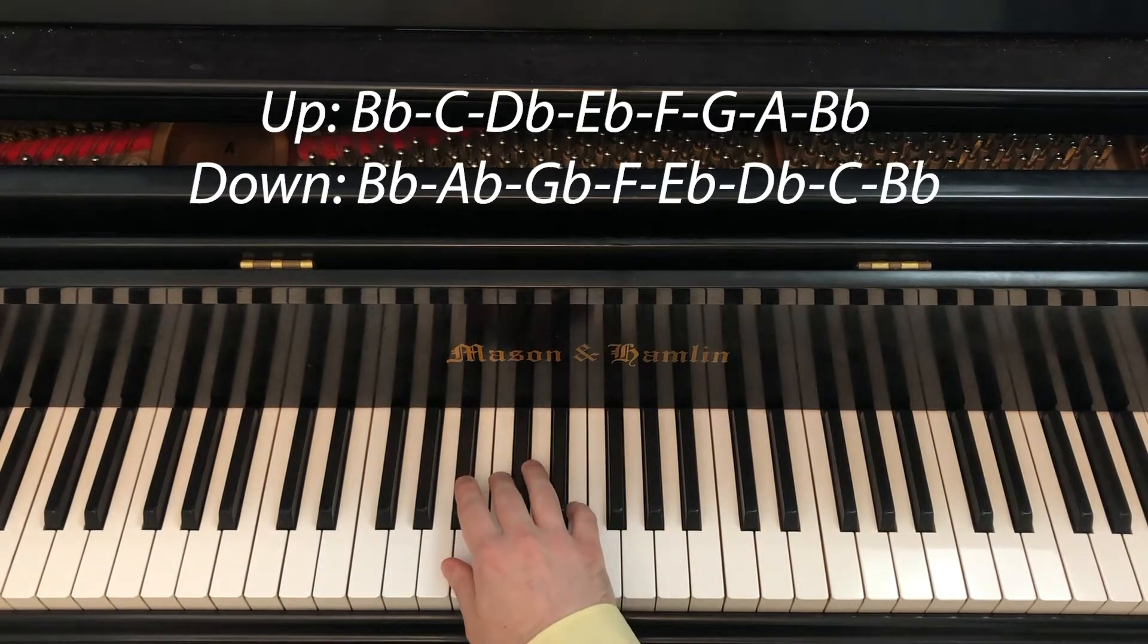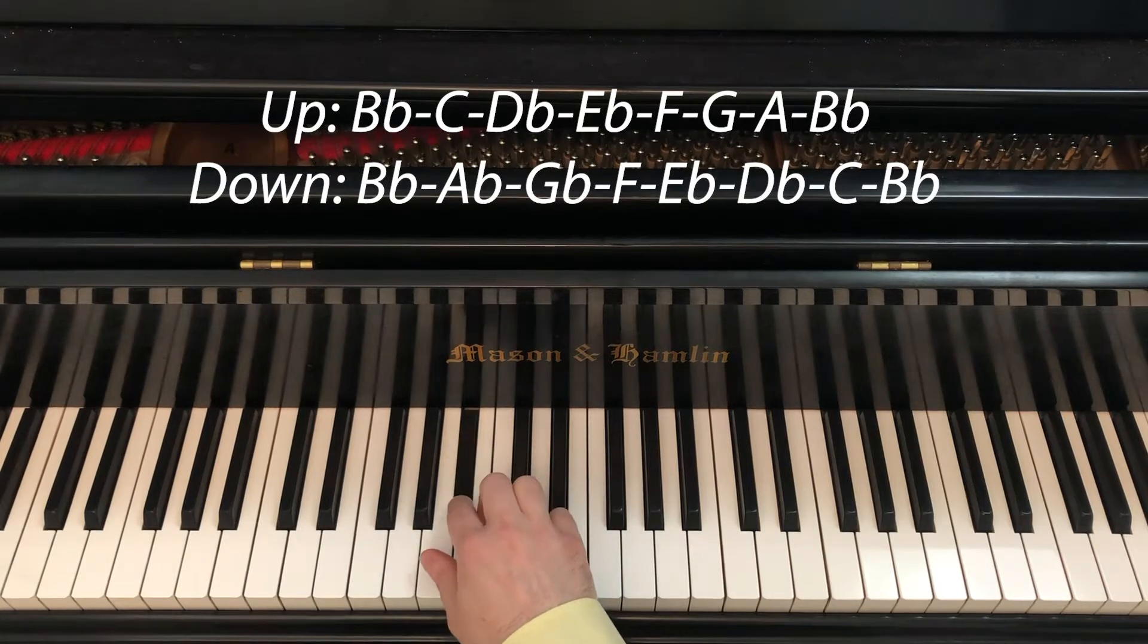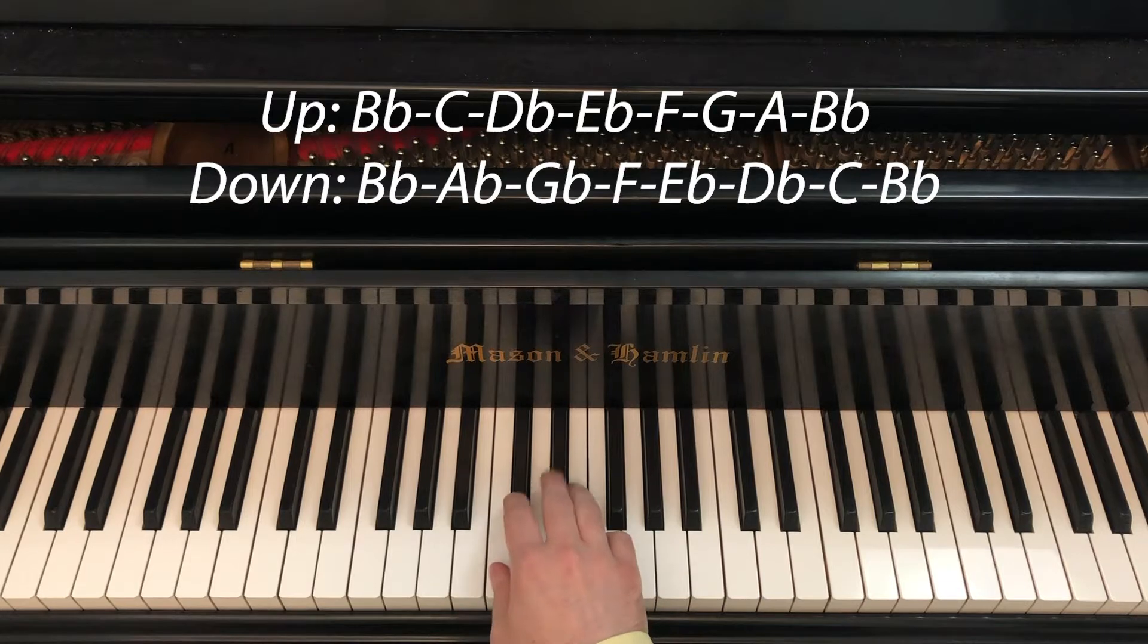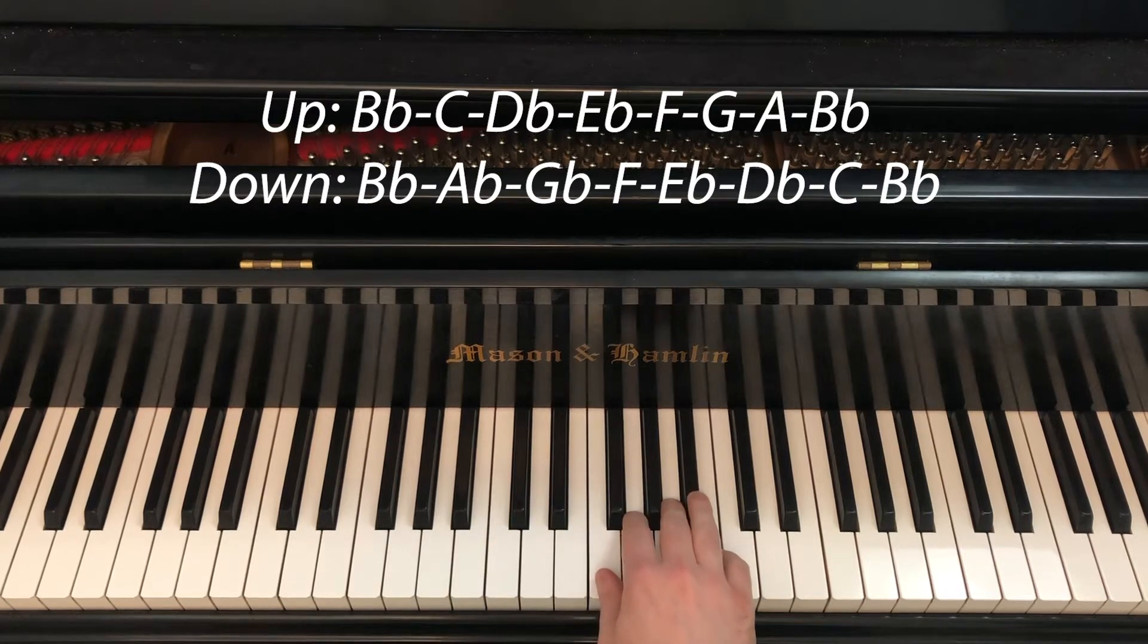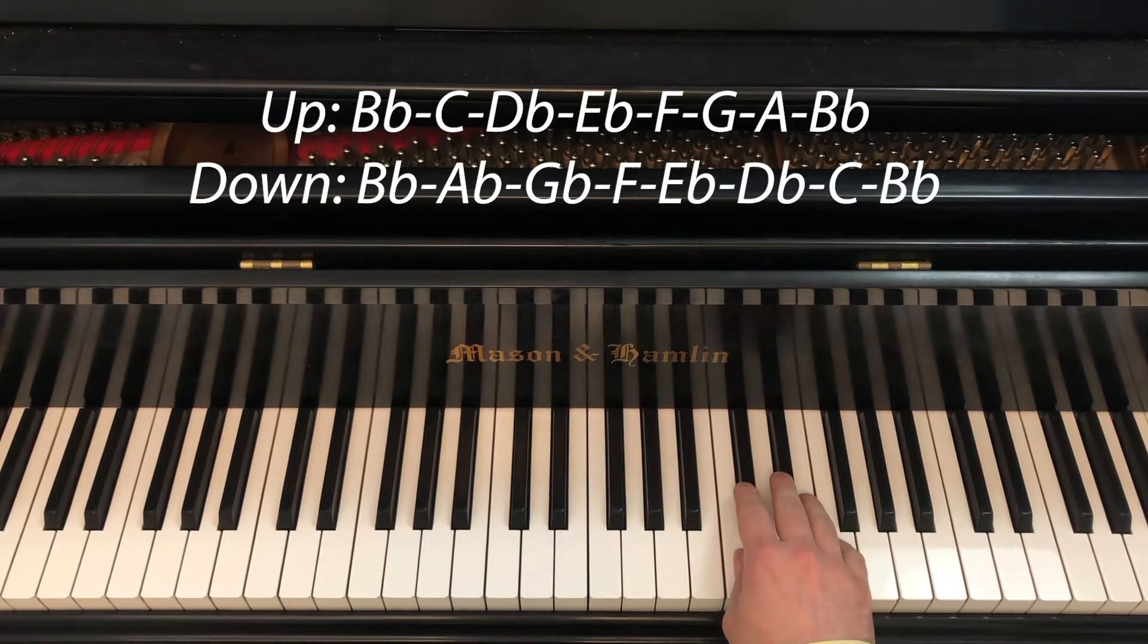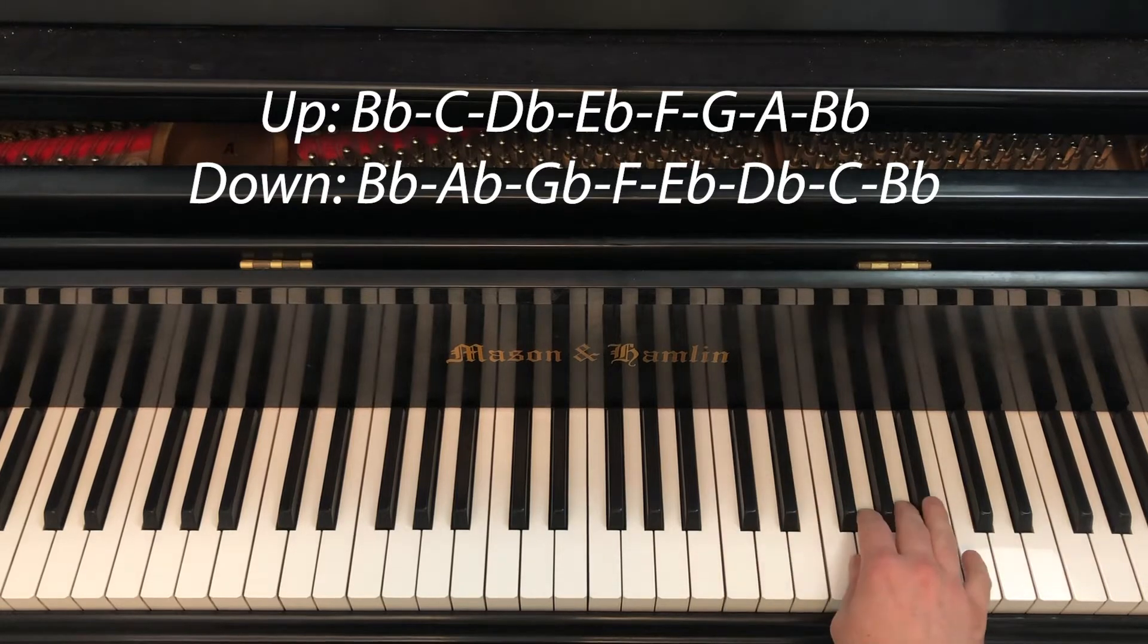B-flat melodic minor in the right hand begins with the second finger on B-flat. Following this, we have one, two, three on C. Then we put the thumb to F and we have F, G-natural, A-natural, B-flat. Then thumb to C, then thumb to F.